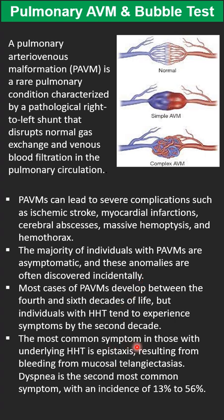In patients with HHT, particularly HHT2, they present with mucosal bleeding — the most common symptom being epistaxis or nasal bleeding. The second symptom is dyspnea or shortness of breath, especially exertional dyspnea. The first step in suspicious patients, including those with unexplained dyspnea, is echocardiography with bubble test.